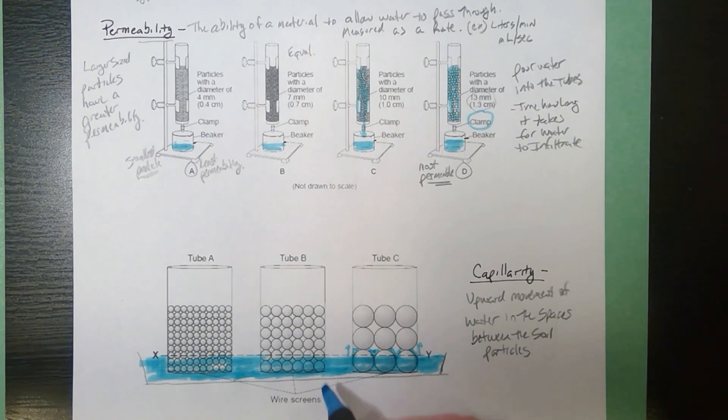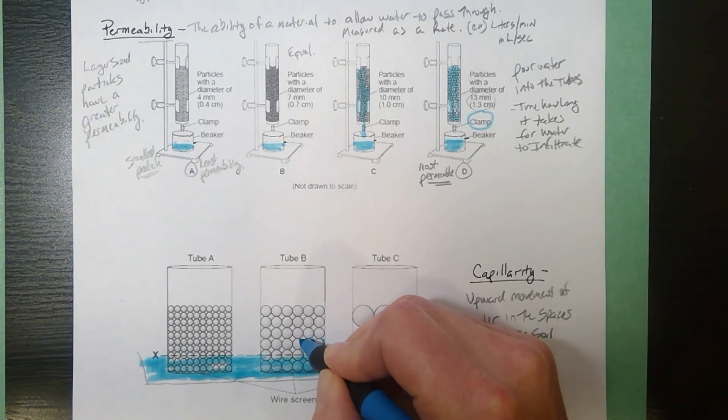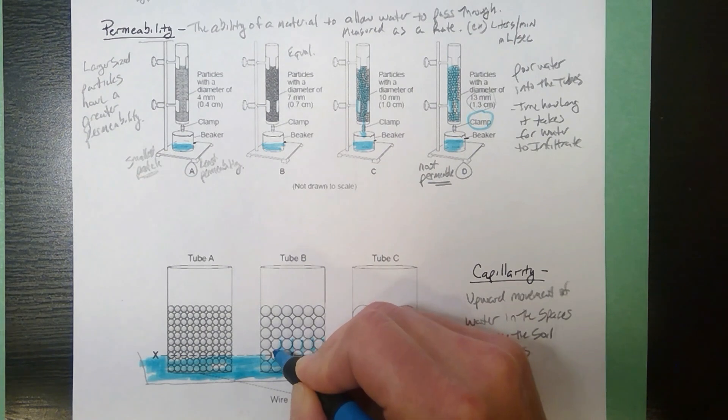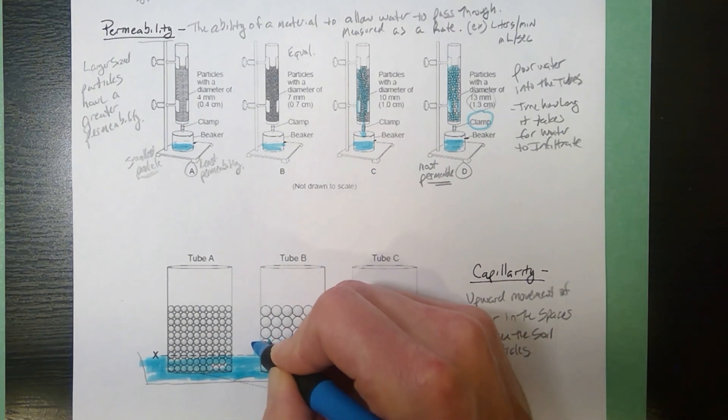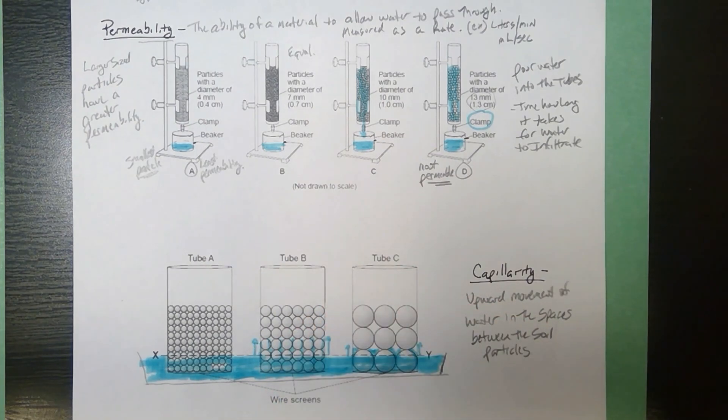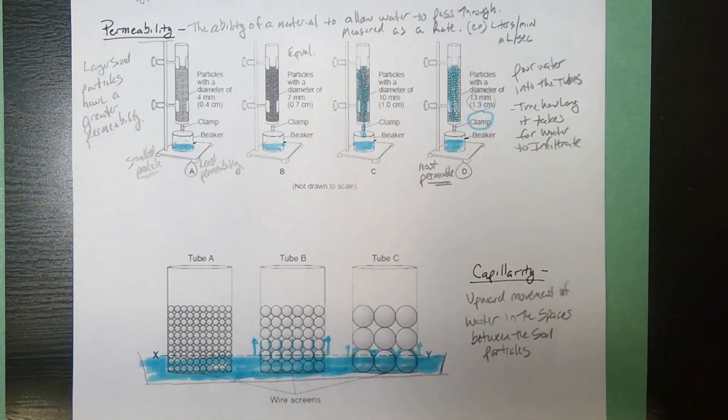Now in tube B there are smaller particles, smaller spaces, and the water actually gets pulled up higher. When I've got a smaller space, more of the water is in contact with the sides, more of the water sticks to the particles. And with smaller particles in tube B, you'd see that the wetness would move up and it would move up a larger distance than in tube C.